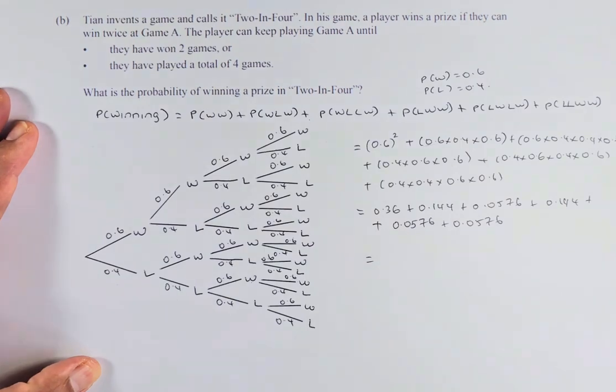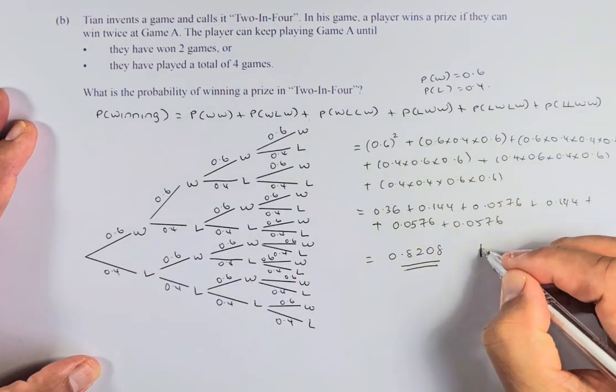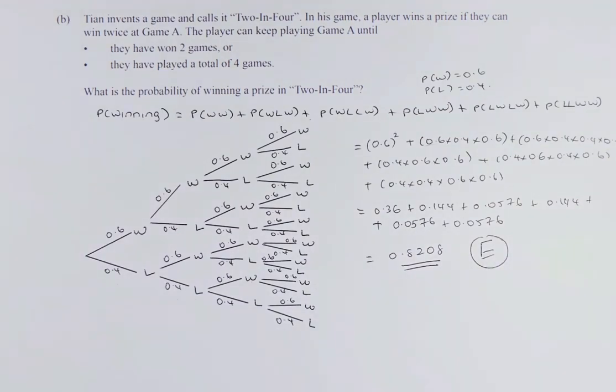Now the last part, you need to put it in your calculator. The answer should give you 0.8208. If you can calculate the probability, you will get excellence in this question, and that will give an E7 in this paper.